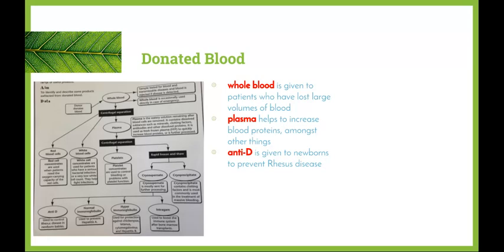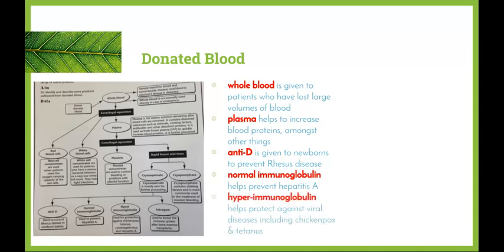NTD is a substance extracted from whole blood that can be given to newborns to prevent Rhesus disease. Normal immunoglobulin helps to prevent hepatitis A, so patients susceptible to it can be given this to help prevent the disease. Hyper immunoglobulin helps to protect against viral diseases such as chickenpox and tetanus, and is given to patients with low immune systems who aren't able to fight off these viruses themselves.